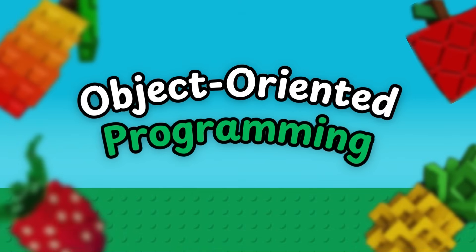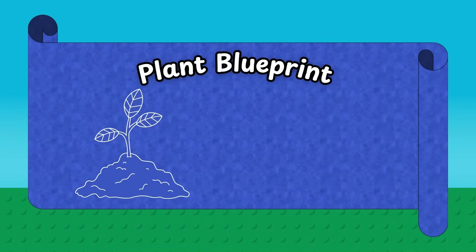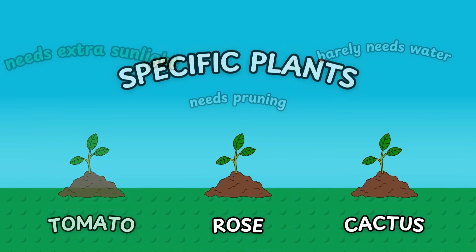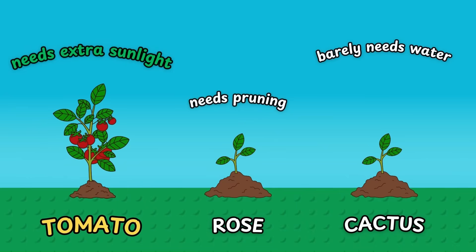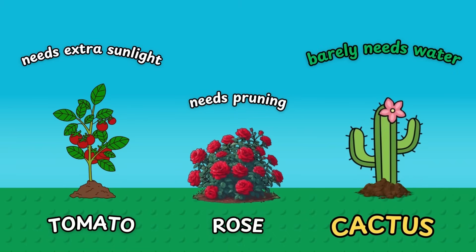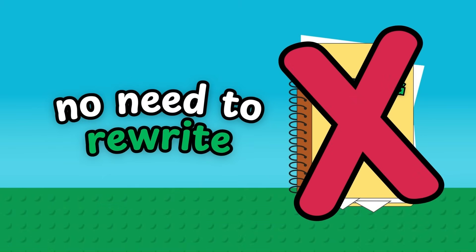And then there's object-oriented programming, which is much different than procedural programming. Why write every little step again and again? Let's think of plants as objects. In your OOP garden, you create a plant blueprint — like a recipe for plants. It knows how to grow, how much water it needs, and what type of soil it prefers. Here is an example of the plant class in code. Then you can make specific plants: tomato inherits from plant but needs extra sunlight; rose inherits from plant but needs pruning; cactus inherits from plant but barely needs water. Each plant is an object that knows how to take care of itself. You don't need to rewrite how to grow a plant every time — you just reuse and customize the blueprint.